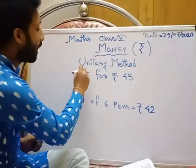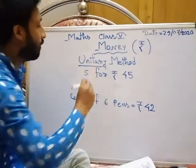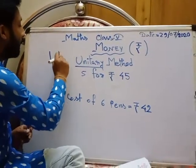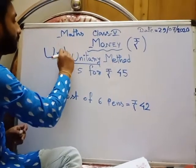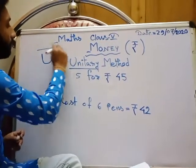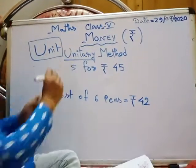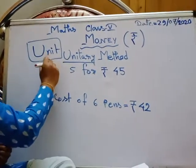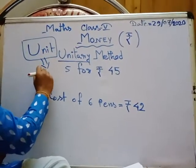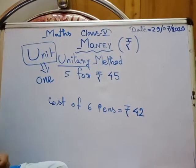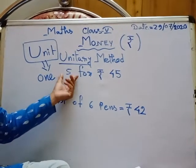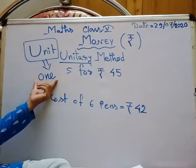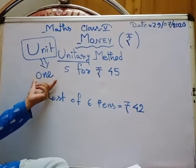The word 'unitary' comes from 'unit.' Unit means 1 — that means we will find out the cost of each and every particular one thing.